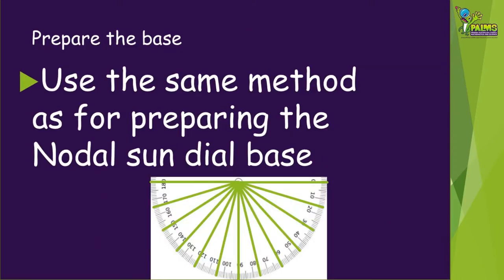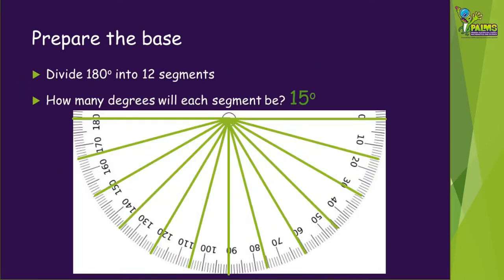We're going to use the same method to prepare the base as we did for the nodal sundial in our first video in this series. We need to divide a semicircle into 12 segments to represent 12 solar hours. The line between each segment will be 15 degrees away from the previous one.